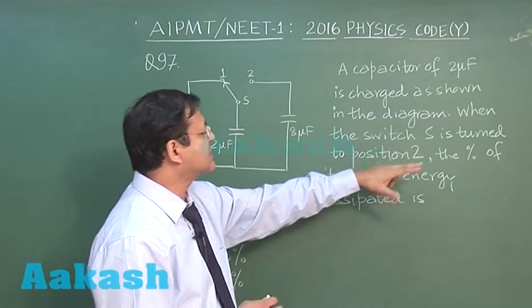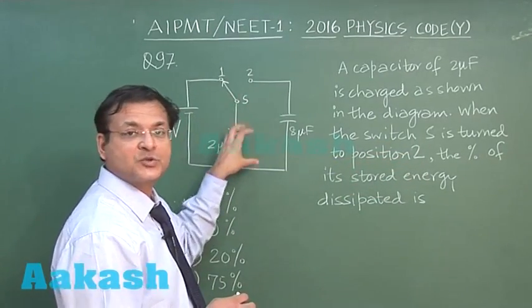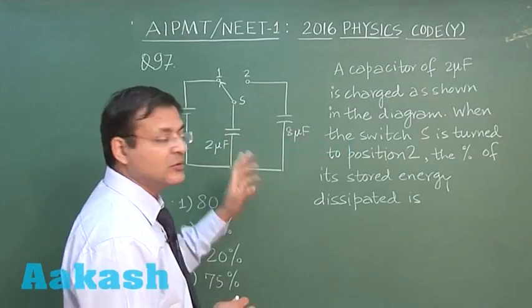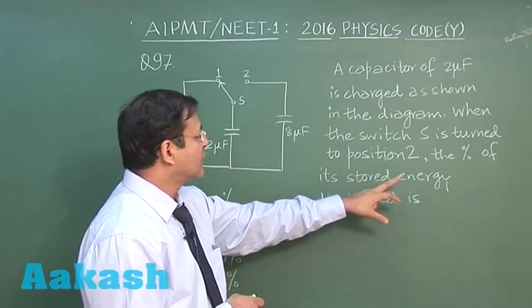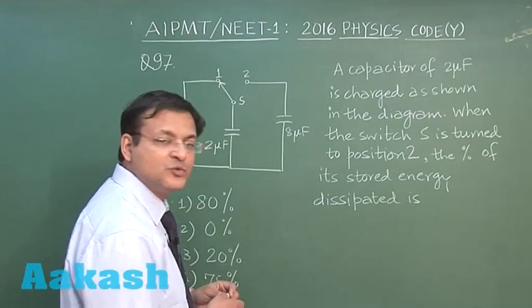When the switch S is turned to position 2, then whatever energy is stored in 2 microfarad will be shared between these two capacitors. In this process, some energy loss will be there. So they are asking the percentage of the stored energy dissipated, that means what is loss. So straightaway use the formula.